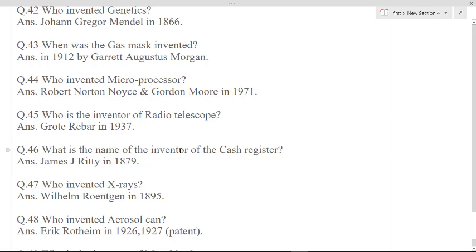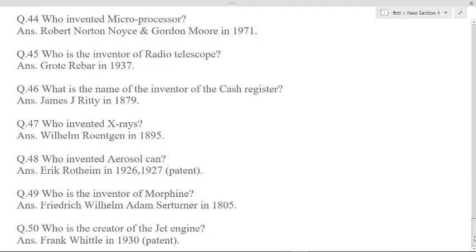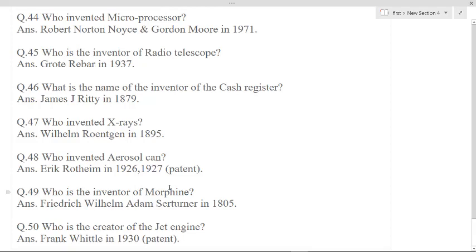Who invented X-ray? Wilhelm Roentgen in 1895. Who invented aerosol can? Erik Rotheim in 1926-27 patent. Who is the inventor of morphine? Friedrich Wilhelm Adam Sertürner in 1805. Who is the creator of jet engine? Frank Whittle in 1930 patent.